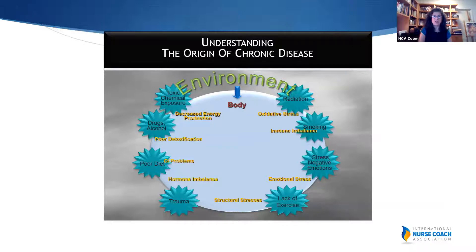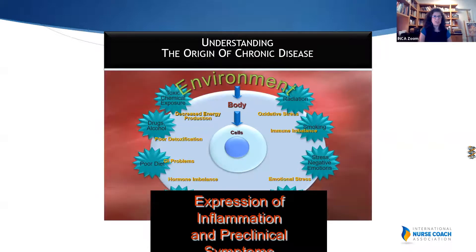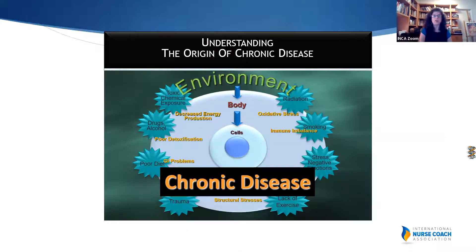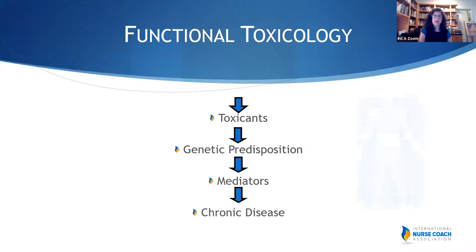Looking at all of this on a cellular level, we can see how it creates what we call inflammation — the buzz today behind all illnesses and pre-conditions. Eventually that feeds into chronic disease across the life cycle. In functional toxicology, we're exposed to toxicants, we all have a genetic predisposition, and there are mediators that trigger the effects of environmental exposures — it could be stress, poor diet, or trauma — all representing different pathways to disease.